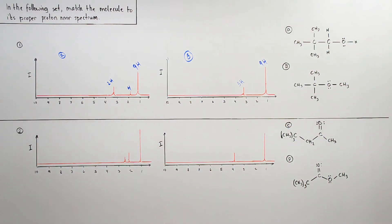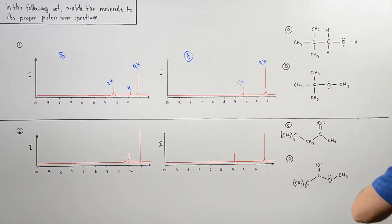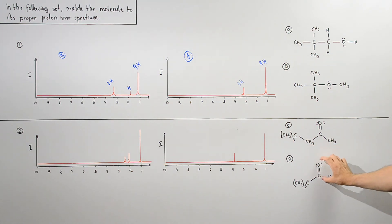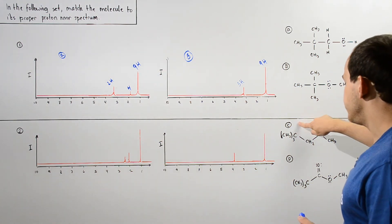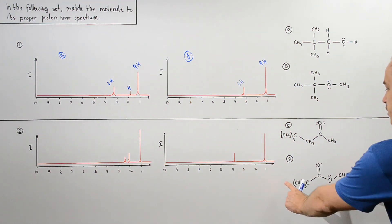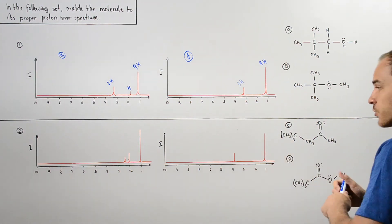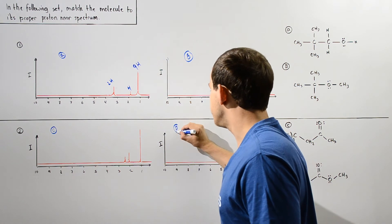Now let's move on to example two, where we have molecule C and molecule D. Notice we have a tert-butyl group, but here we have a slightly different structure: a CH2 group and a carbonyl group, making them not exactly the same molecule. We follow the same procedure as before — determining how many different types of H atoms are in each molecule. Molecule C has one, two, and three different types of H atoms, while molecule D has only one and two. So molecule C must have three signals and molecule D must have two signals.